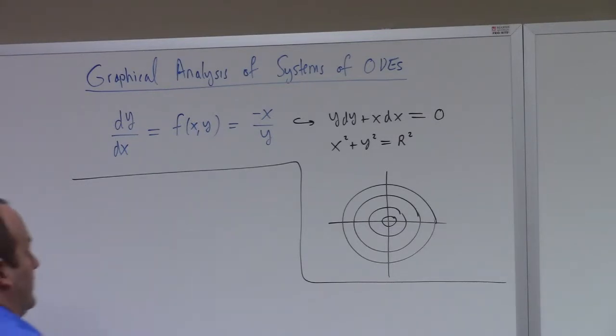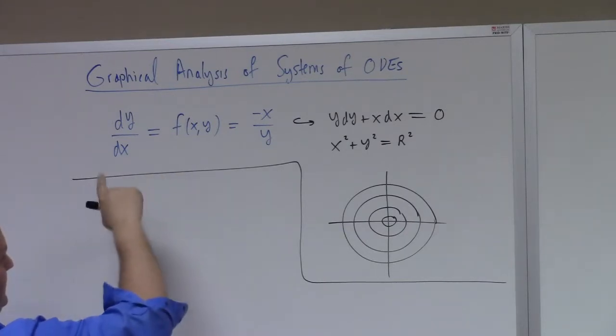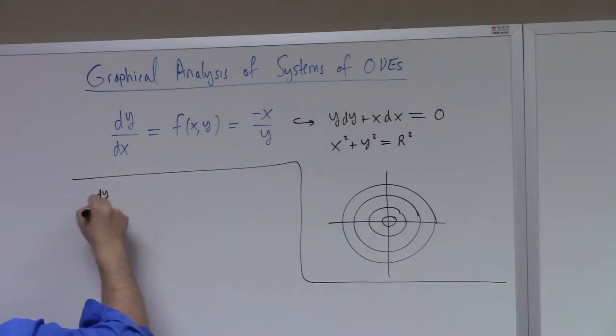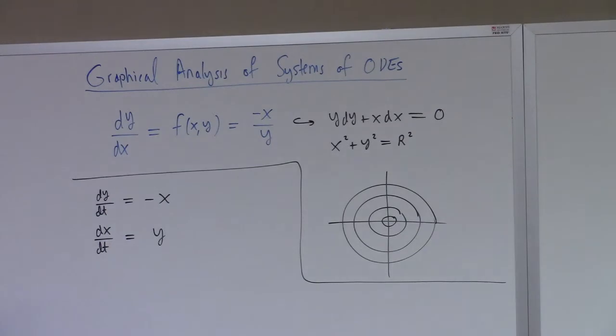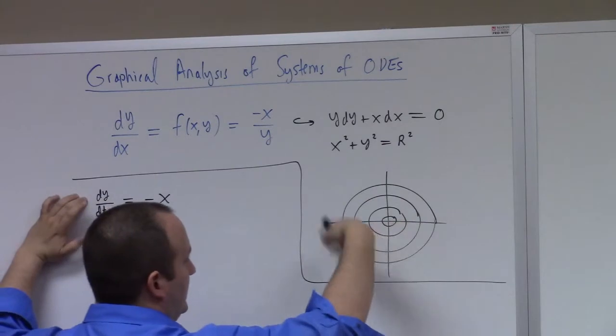Another thing you could do for this differential equation is trade it for a set of two. We could say dy/dt equals minus X and dx/dt is equal to Y. See what I did there? You could formally think of dividing the top and bottom by dt and equating the numerator and denominator.